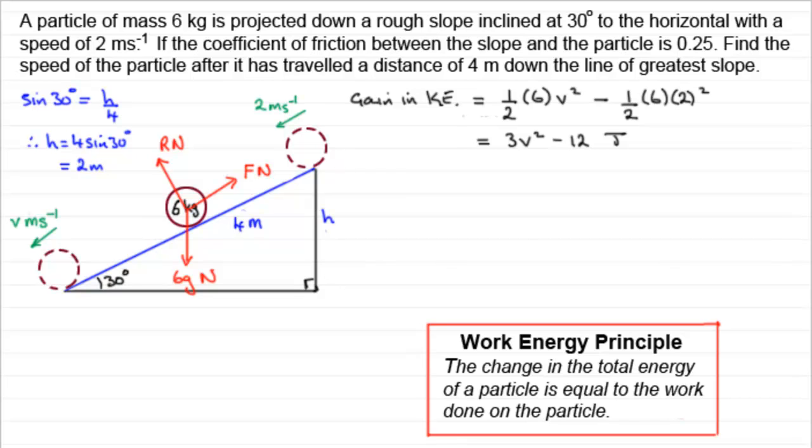So when it comes to looking at the loss in gravitational potential energy, GPE for short, remember gravitational potential energy is MGH. So we've got M being the 6 multiplied by G, multiplied by H, H being 2. So that's our loss in gravitational potential energy. As it goes down the slope, it loses this height here.